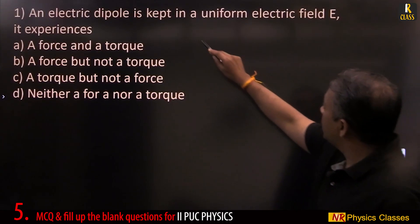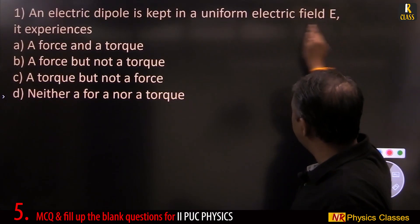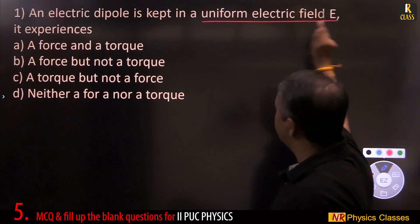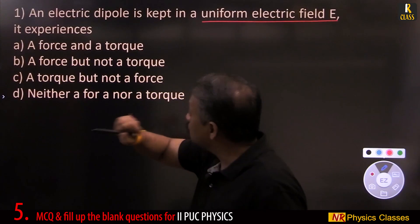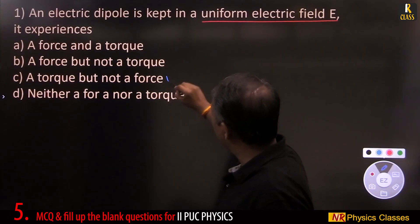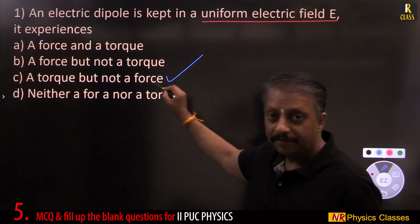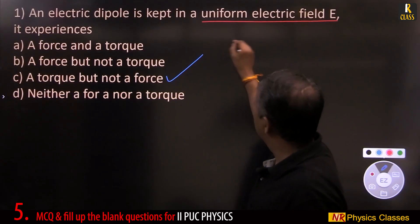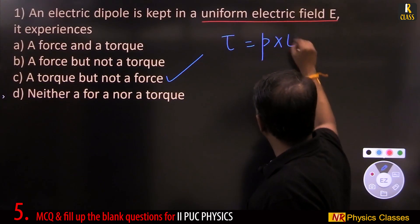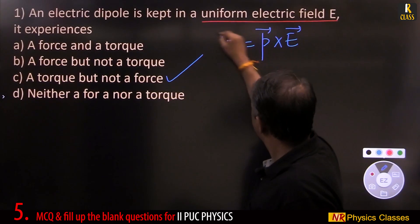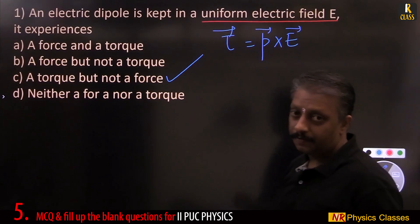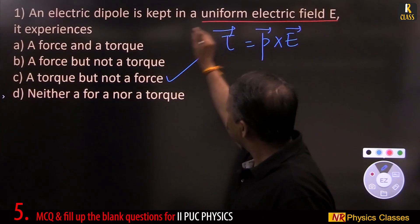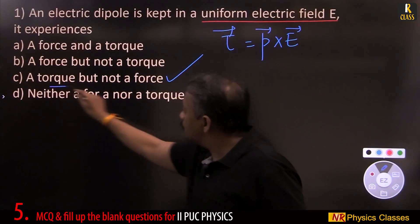An electric dipole is kept in a uniform electric field. It experiences only torque, torque but not force. We have the derivation, right? Tau equal to P cross E. Cross product of dipole moment and electric field gives torque. Uniform field, only torque, force is zero.